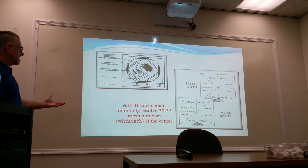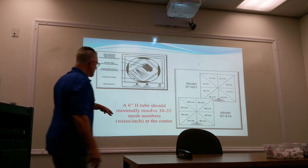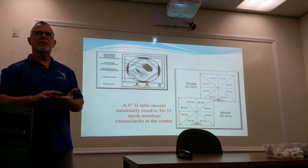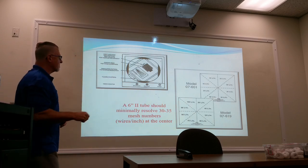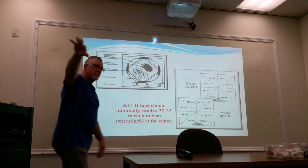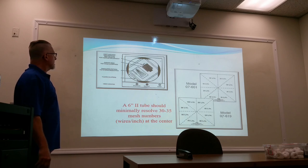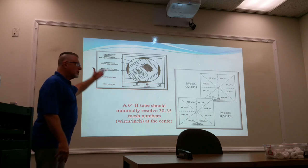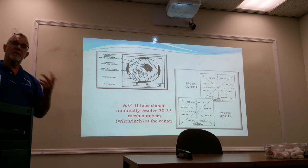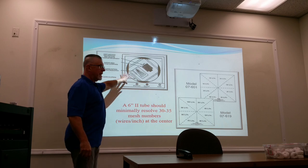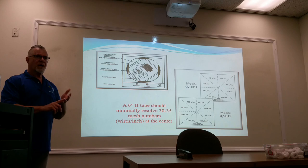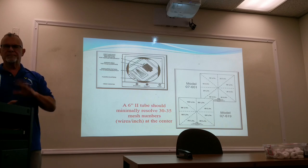A six-inch image intensifier should minimally resolve 30 to 35 mesh numbers. These are easy to make — just pieces of screen with mesh of so many mesh per linear inch. You look at sharpness, resolution, and things like that. On an image intensifier, what you see at the center versus the edge are very different because you have to deal with veiling glare and barrel distortion.